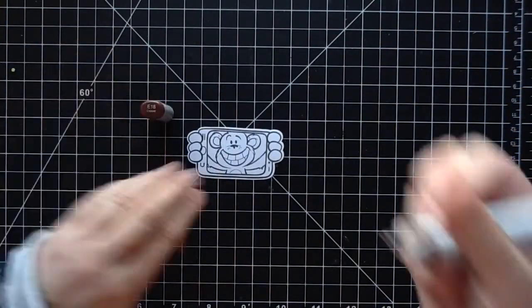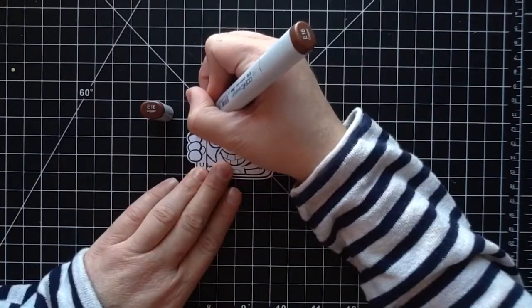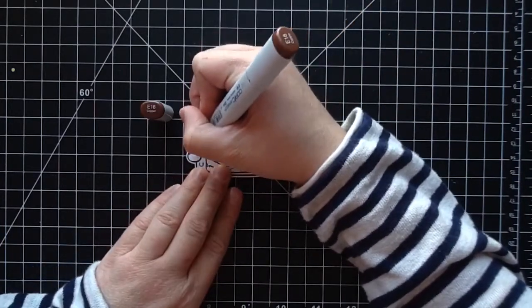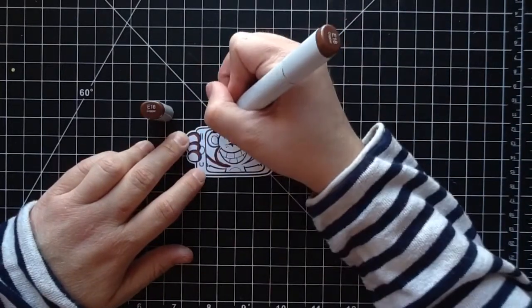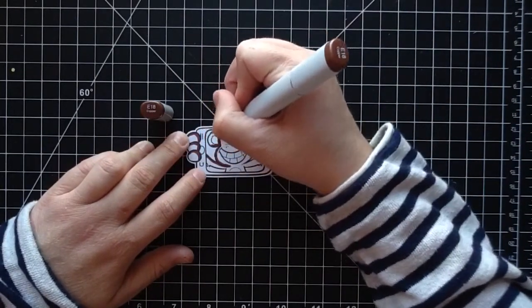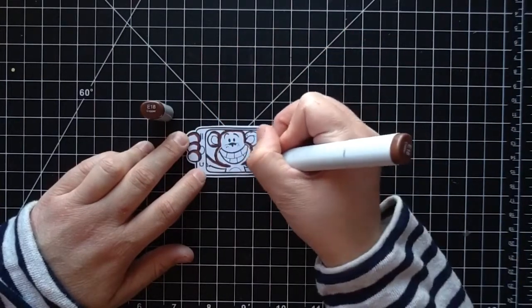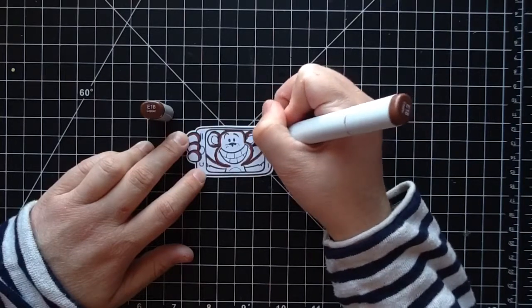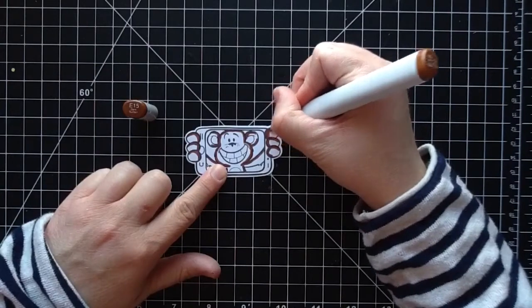I'm going to start out by using my Copic markers for the coloring today. I'm starting with E18 for the brown darkest part of the monkey. I'm just doing his hands there. I just think this is such a cute image. I love it so much. I'm just going around where all the darkest portion is going to be.